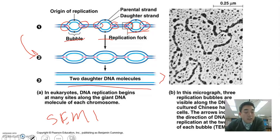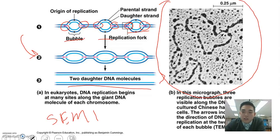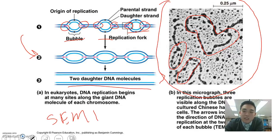DNA replication in eukaryotes can occur at multiple sites of replication, and multiple bubbles are going to be formed. In picture B over here, it shows a micrograph of replication bubbles. As you can see, we have a bubble right here, a bubble right here, and a bubble right here. These arrows indicate the direction that replication is happening, and eventually when all those arrows meet, replication is going to be complete.